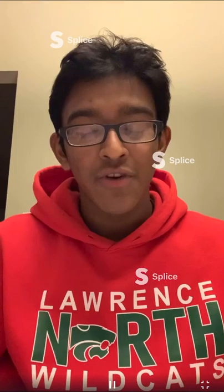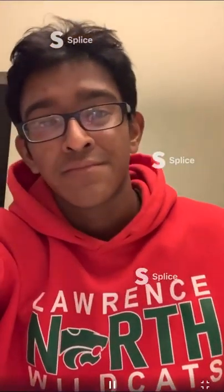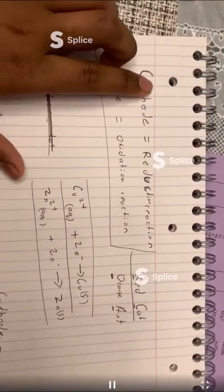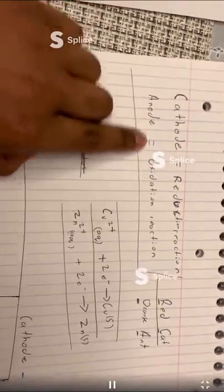Alright, so a lot of people don't know what the oxidation rules are or how to draw voltaic cells, and I'm going to try my best to explain how to draw these voltaic cells and also answer these questions for the upcoming IU test. Here are just a few notes that I wrote. Cathode is a reduction reaction, anode is an oxidation reaction.